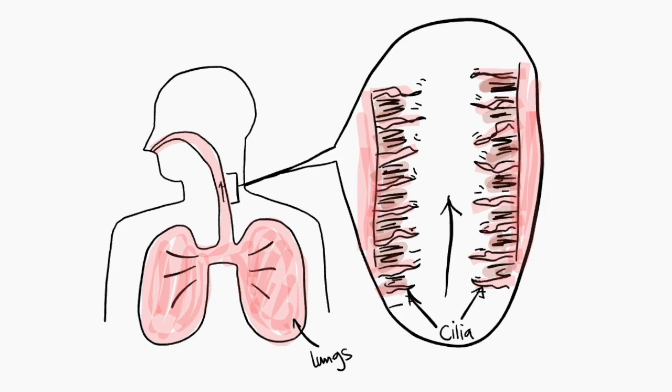They also move eggs along the uterine tube to prepare for fertilization. Flagella, however, can be found on sperm cells, allowing sperm to move into the egg during fertilization.